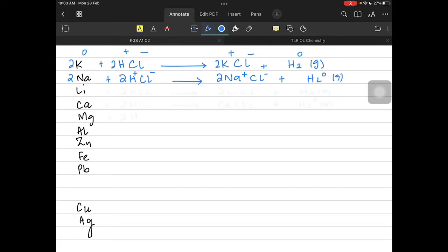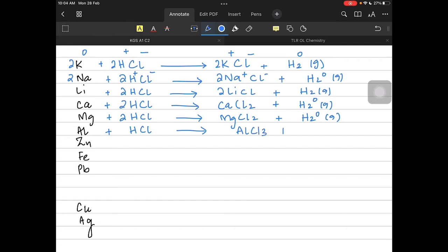Lithium chloride, calcium chloride, and magnesium chloride could have been formed in a similar way. Each time the metal lost electrons and became a plus one or plus two charge depending on the number of electrons lost. In case of aluminum, AlCl3 is formed because aluminum is a plus three charge and Cl is a minus one.